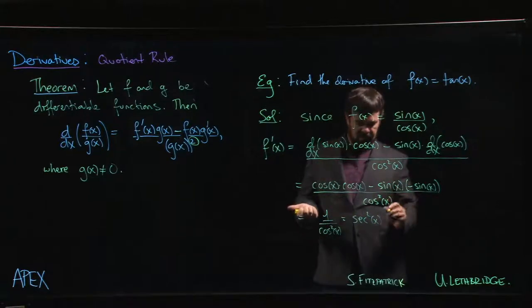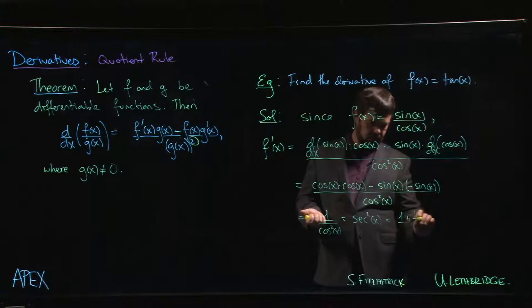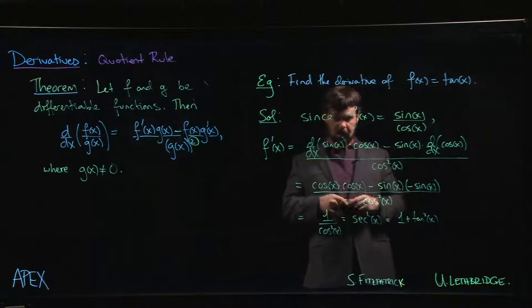So we could also have written this as 1 plus tan squared. But of course, that's an identity that we know. We know that secant squared is equal to 1 plus tan squared. That's just a variation on the sine squared plus cos squared identity.